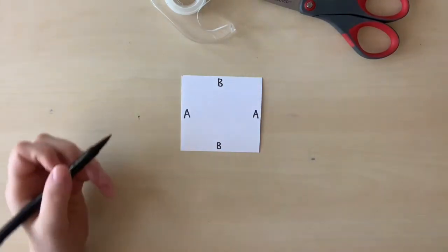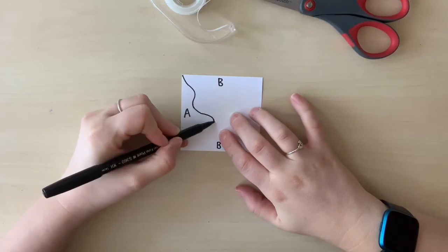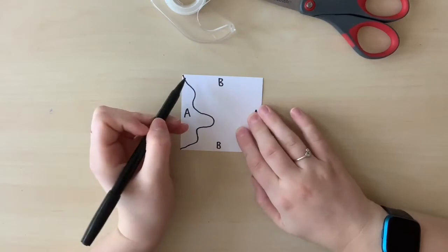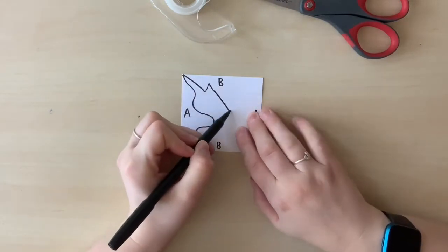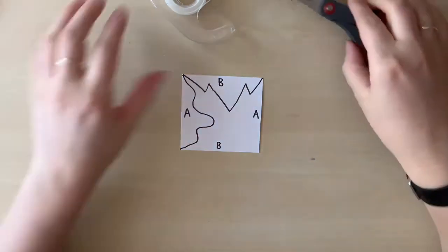That's going to help us because we're going to cut apart this shape. On one side with an A, I'm going to draw a line. It doesn't matter what it looks like as long as it stays just on the A side. And then I'll do the same on one of the B sides. Just draw a line, making sure it only stays on that side of the paper.